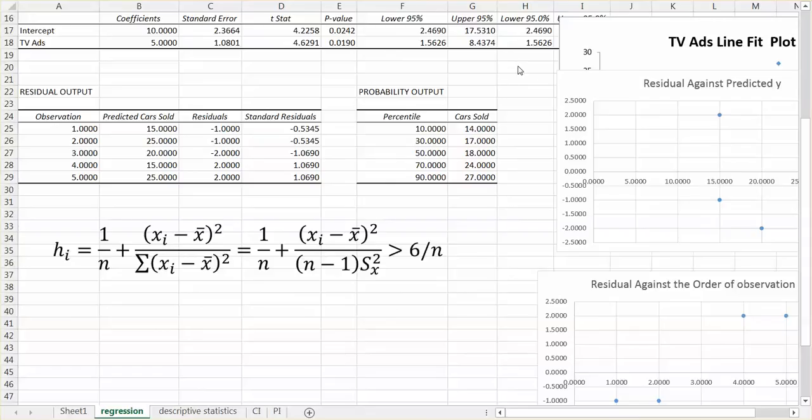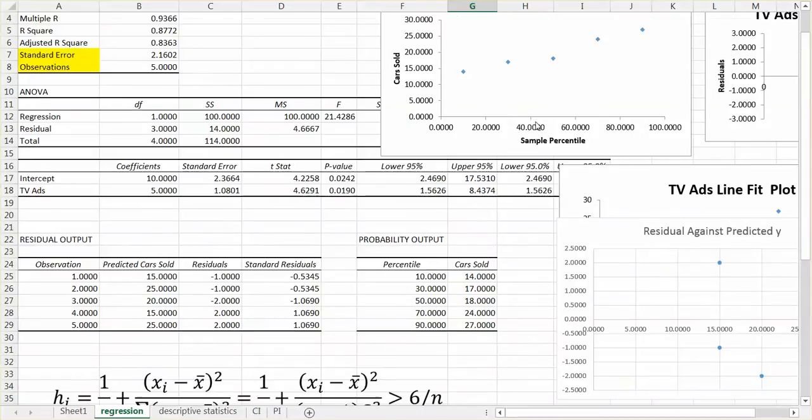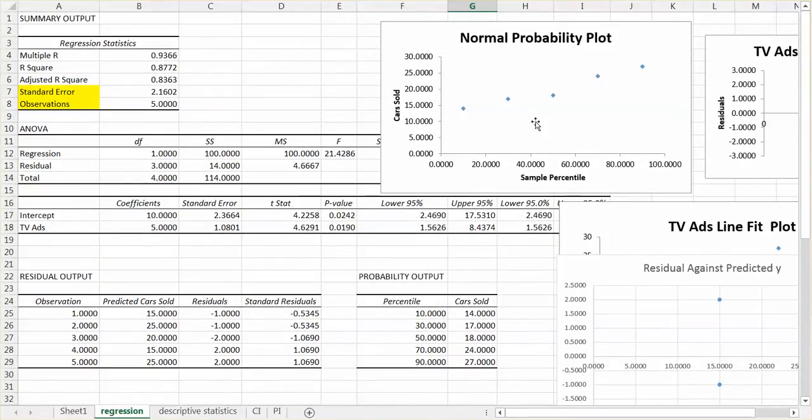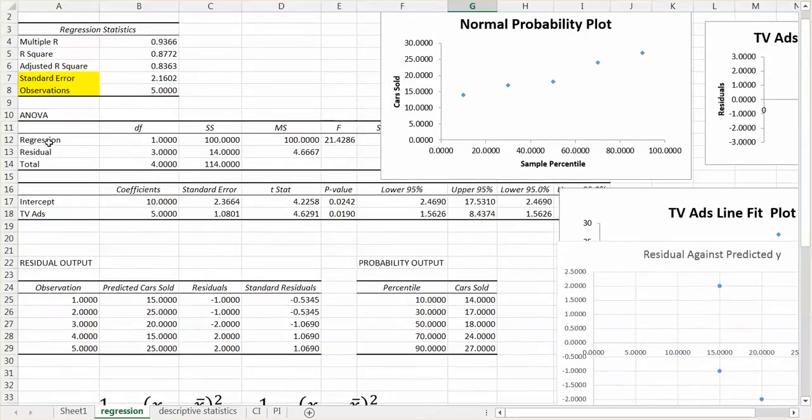So actually, once you get the regression output, it's very easy to identify where is our place to identify outliers. Before I start to mention the certain area, I want to mention about the regression output again. You need to use the data analysis button to use the regression command from the regression analysis windows. And after you have the output, we have four parts.